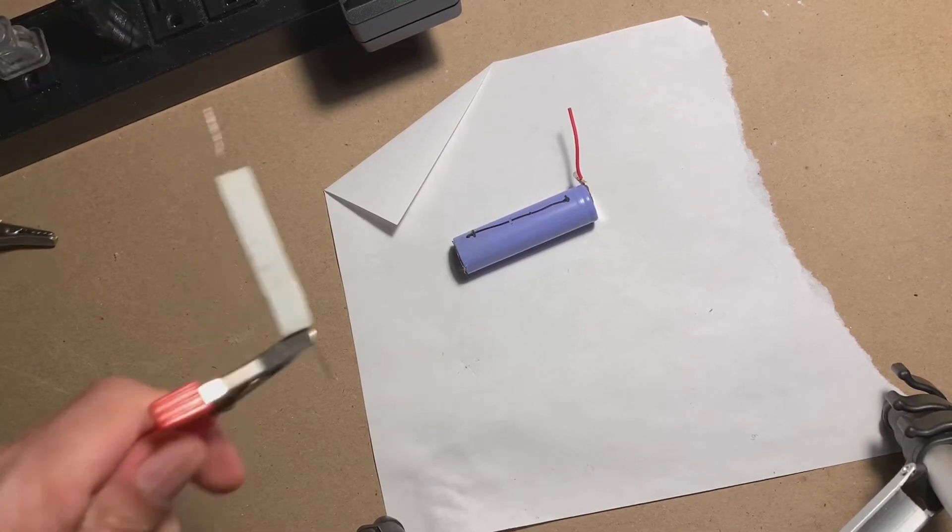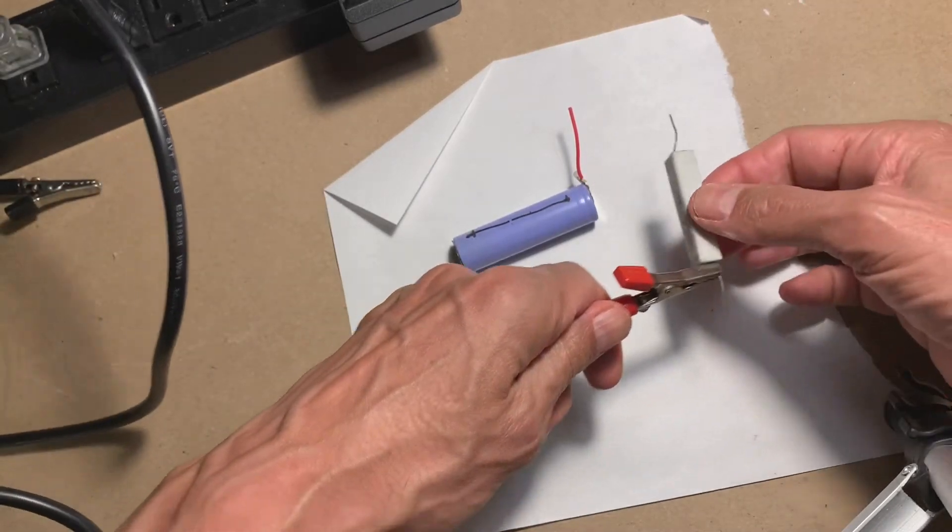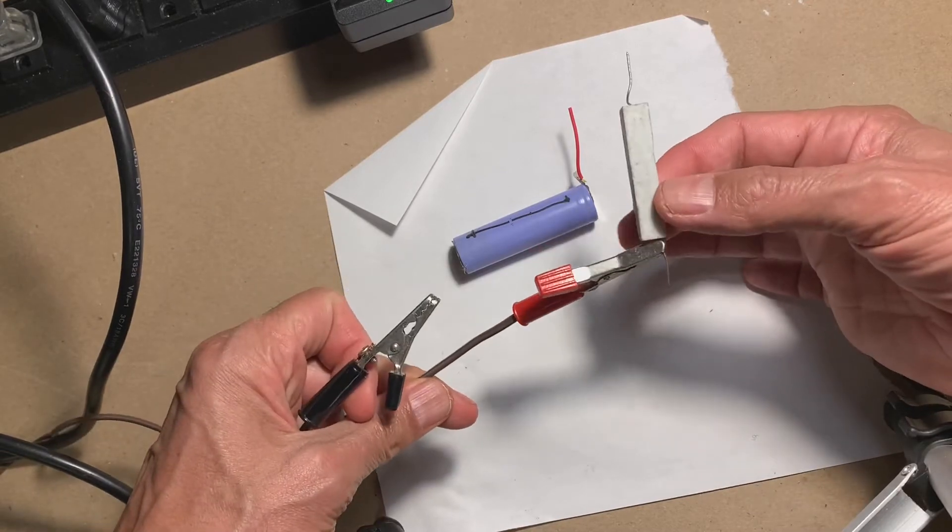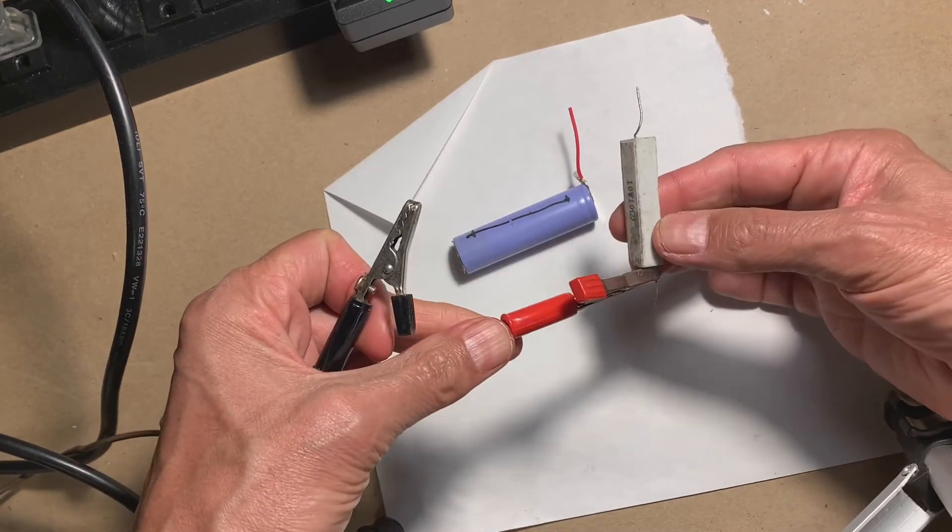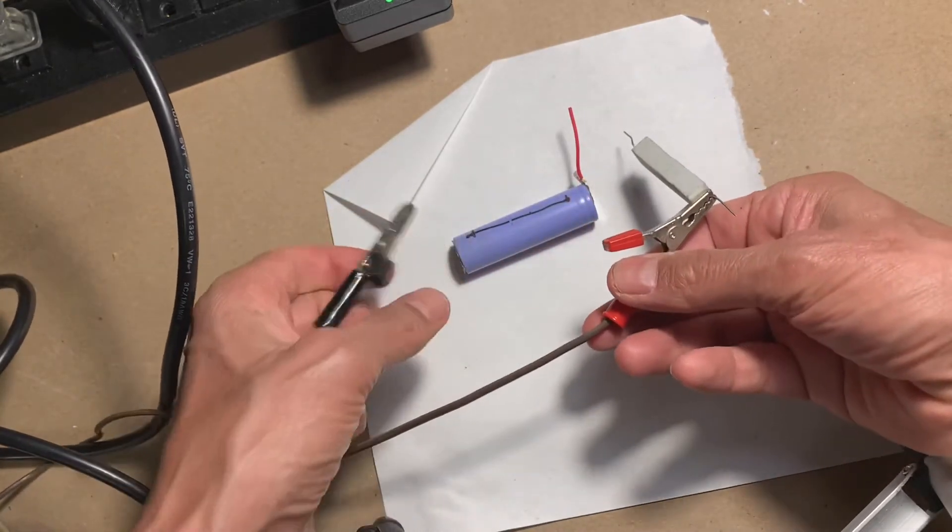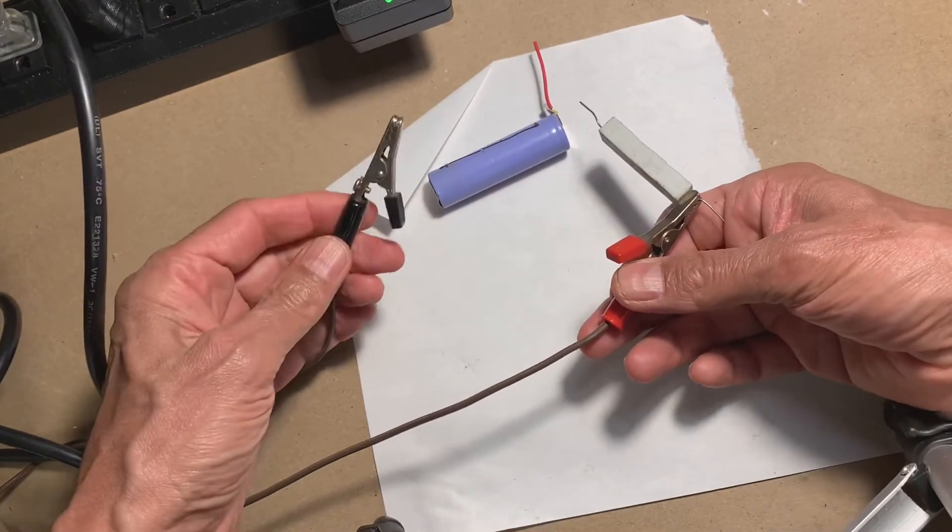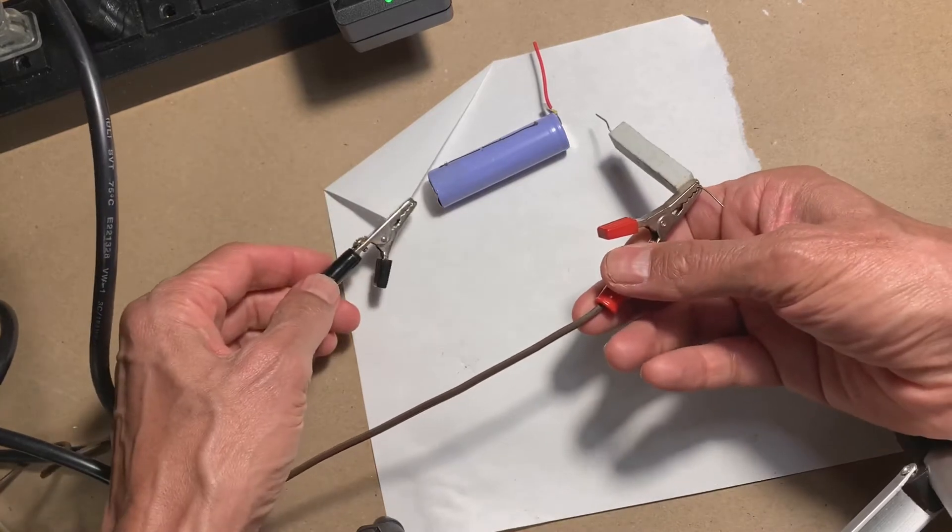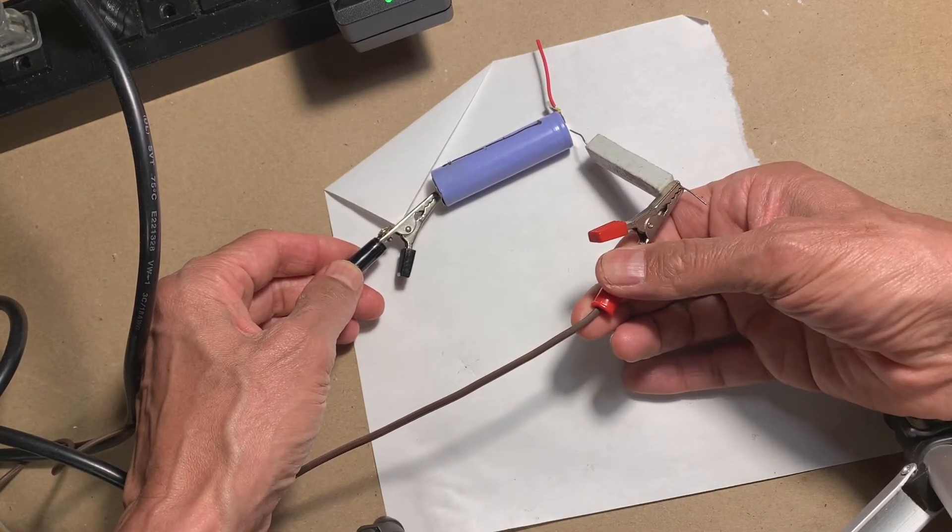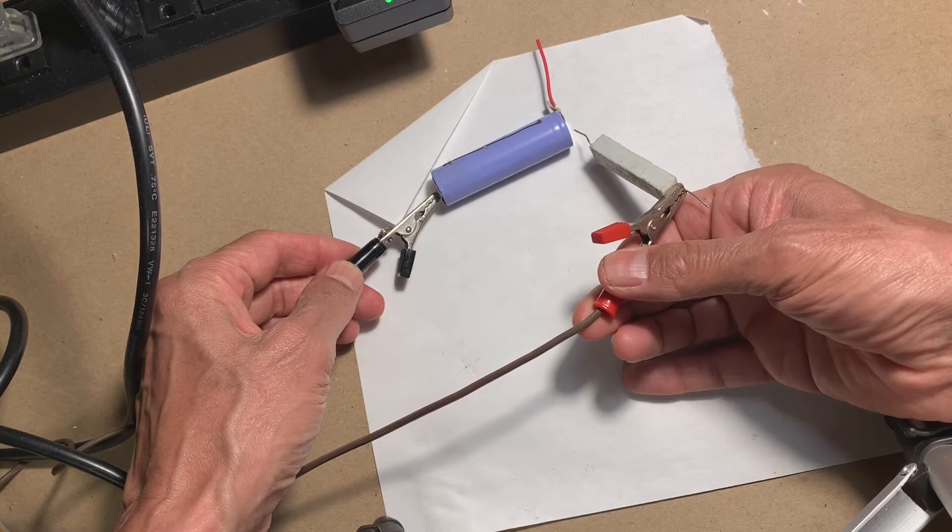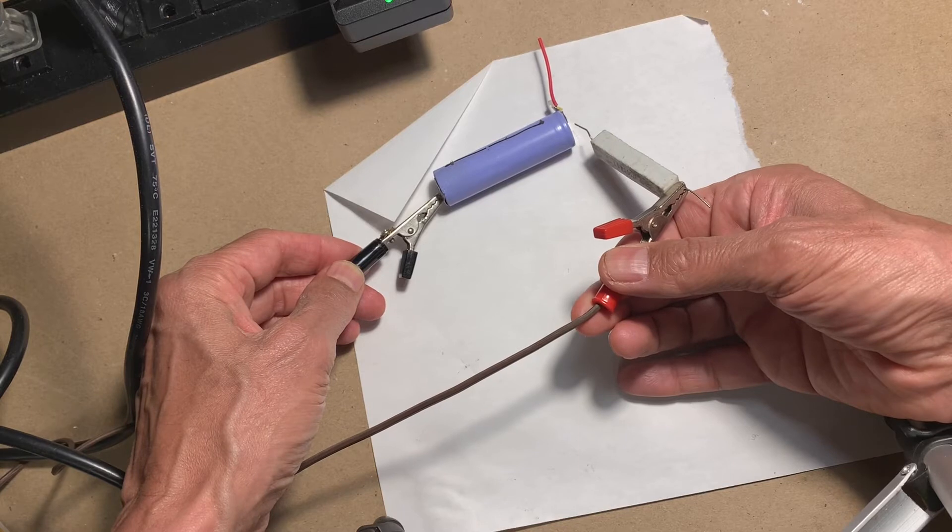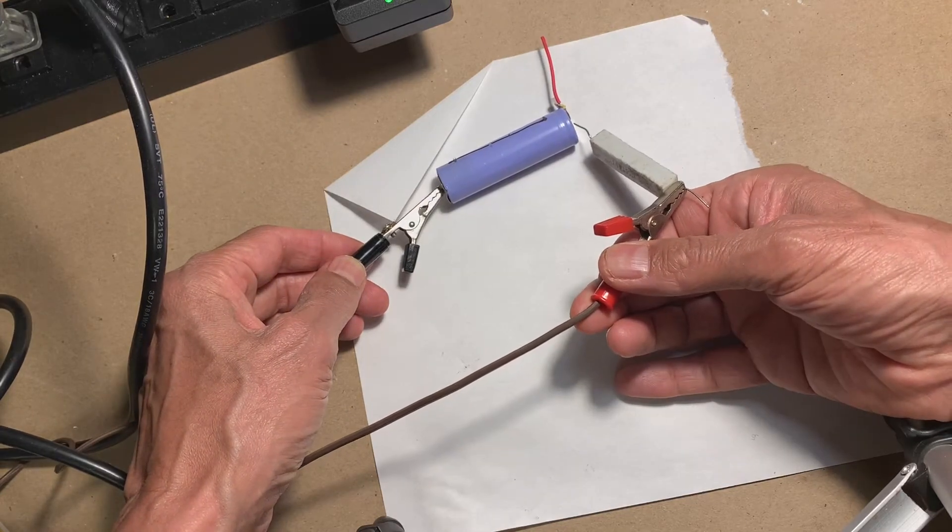I've got a 10-ohm resistor here. This is a ceramic high-power resistor rated for 10 watts, because this is going to generate some heat. So here's my negative and here's my positive. You can hear the switching power supply fan revving up because it's putting some energy into this battery.